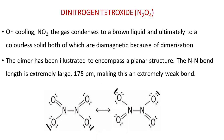Another nitrogen oxide is dinitrogen tetroxide, with the chemical formula N2O4. On cooling nitrogen dioxide, the gas condenses to a brown liquid and ultimately to a colorless solid, both of which are diamagnetic because of dimerization. The dimer has been shown to have a planar structure. The nitrogen-nitrogen bond length is extremely large at 175 picometers, making this an extremely weak bond.